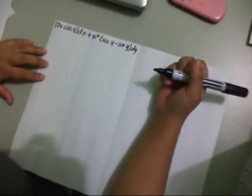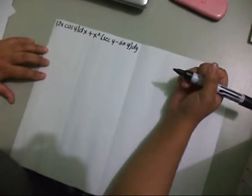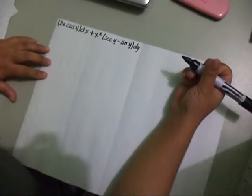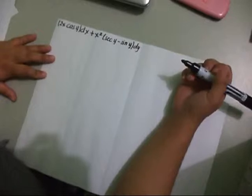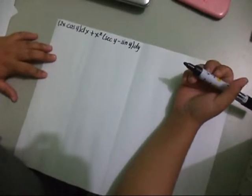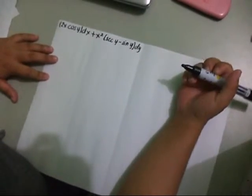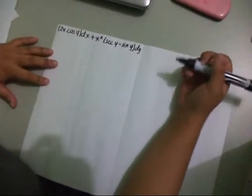Number 20, page 28 of the board. First, we need to simplify this equation to know what kind of differential equation it is.